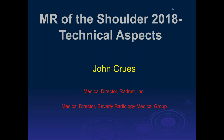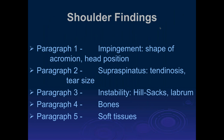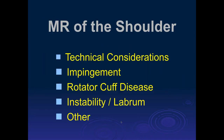Let's start the shoulder today. We're going to talk about some anatomy and chromium, then the rotator cuff, instability balance, and soft tissue considerations. But first, let's talk about technical aspects during MR scanning, and then we'll go into these other topics.